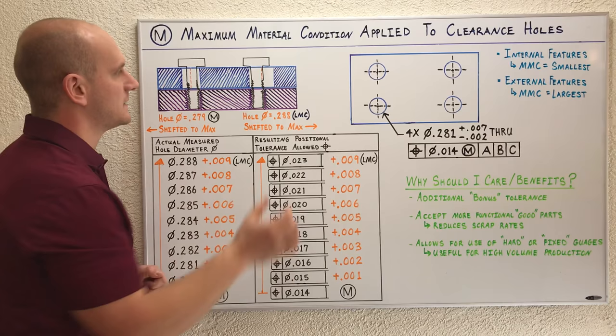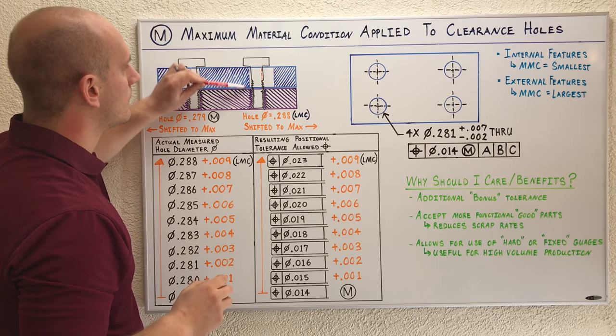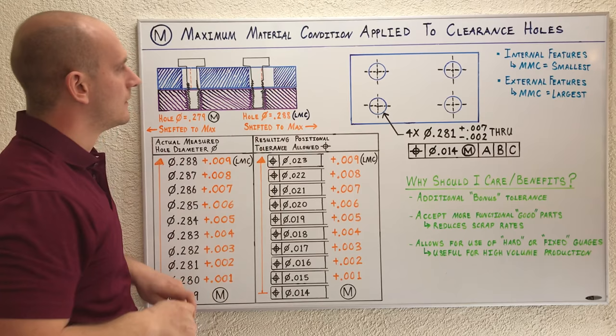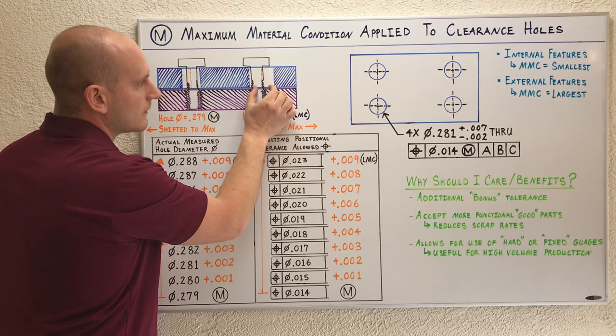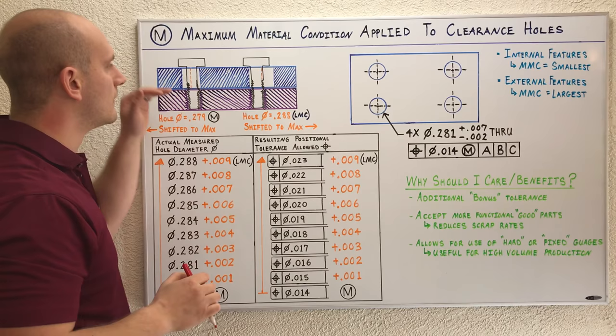Because even though the hole is deviating over even more, the hole size itself is getting bigger by the same amount of deviation. So once again, our clearance hole surface does not interfere with our fastener surface. Just to reiterate, yes, the hole is shifted over even more, but its diameter has also increased by the same amount. We don't have any interference between the clearance hole surface and the fastener surface. That is critical for fit, assembly, and function of our parts.